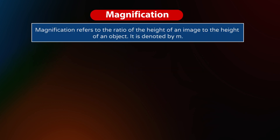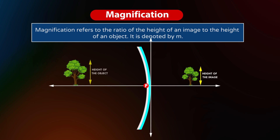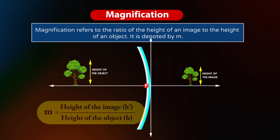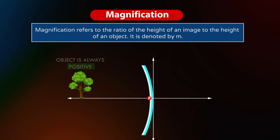Magnification refers to the ratio of the height of an image to the height of an object. It is denoted by the letter M — that is, the comparison of the size of the image with respect to the size of the object. M = H'/H, where H' is the height of the image and H is the height of the object. The height of the object is taken as positive since it is usually placed above the principal axis.